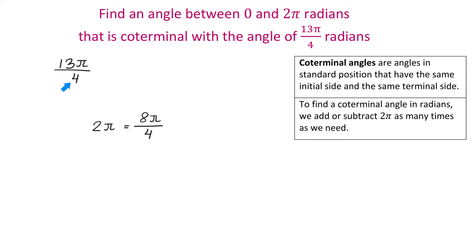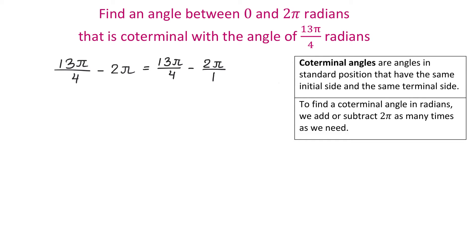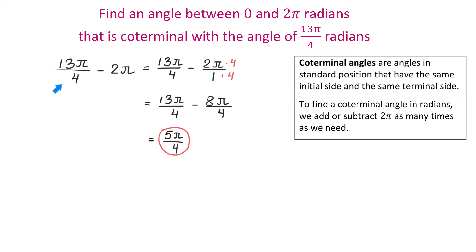To find an angle between 0 and 2 pi radians that is coterminal with the given angle, we will subtract 2 pi radians. So we have 13 pi over 4 minus 2 pi. To be able to subtract, we have to get the same denominator. We write 13 pi over 4 minus 2 pi over 1, and multiply the second fraction by 4 in the numerator and denominator. Then we have 13 pi over 4 minus 8 pi over 4. Since 13 minus 8 is 5, we get 5 pi over 4. This is an angle between 0 and 2 pi radians that is coterminal with 13 pi over 4.